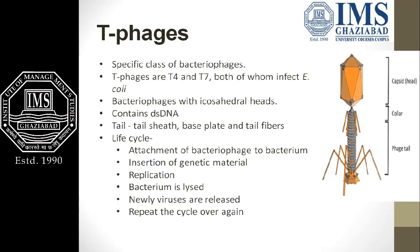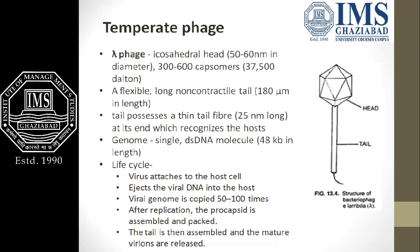After penetration, T-phages replicate inside the host cell. Then the bacterium lyses and newly formed viruses are released from the bacterial cell, and they repeat the cycle all over again. Basically, they perform the lytic type of life cycle.